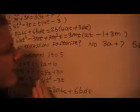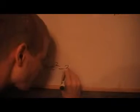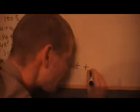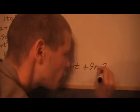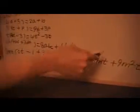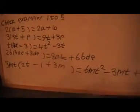3mt times 2t minus 1 plus 3m. That's equal to 6mt squared minus 3mt plus 9m squared t. We get that. So there you go. We just multiply out the brackets to see if you've factorised them right. And if you have, you end up with your original expression that you've factorised.